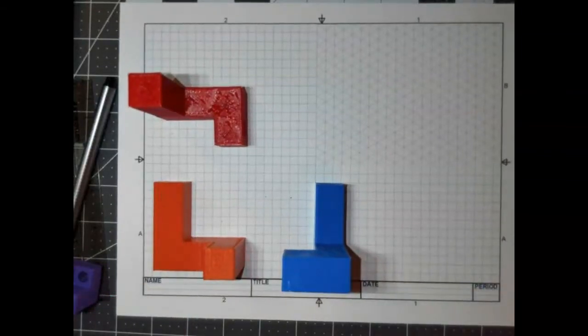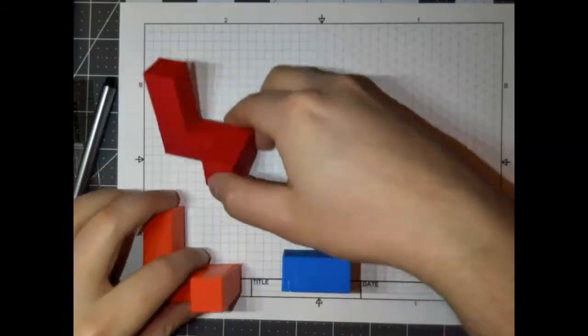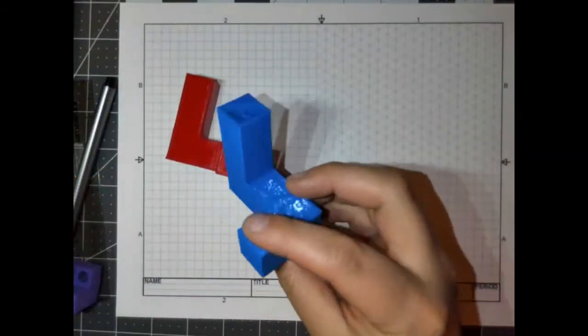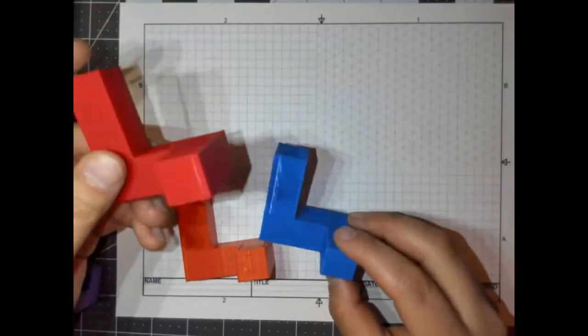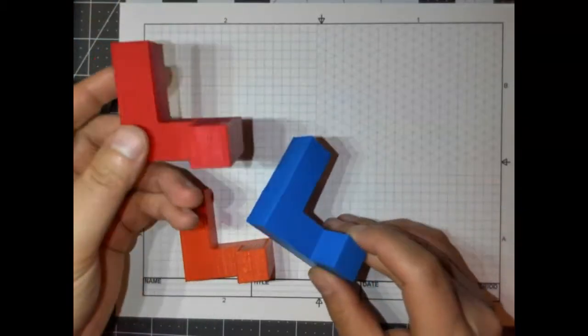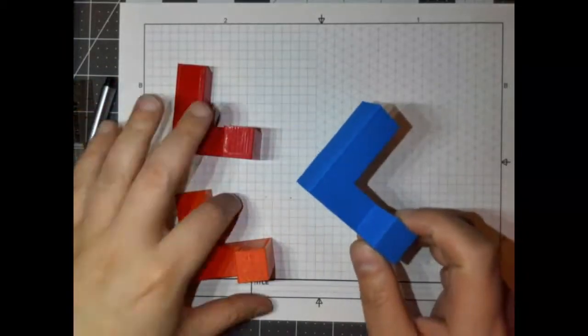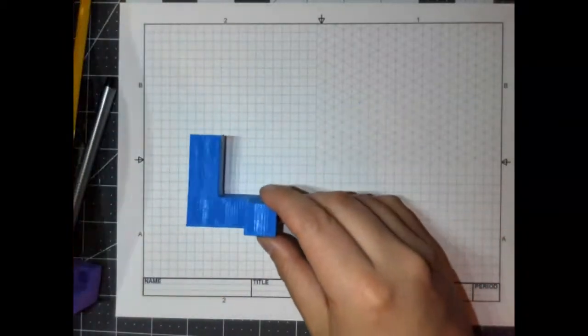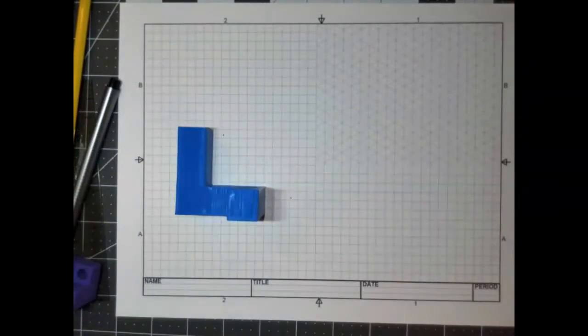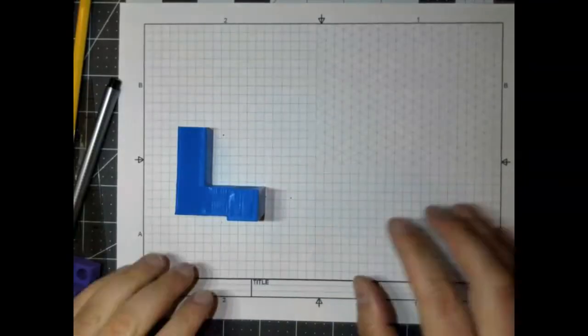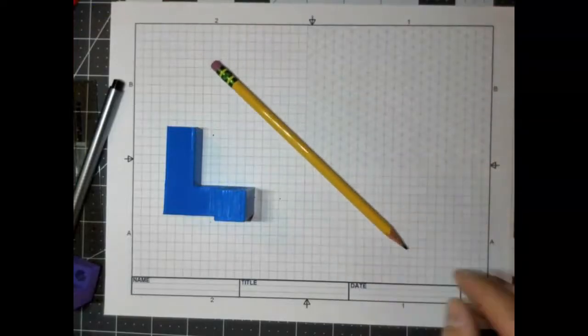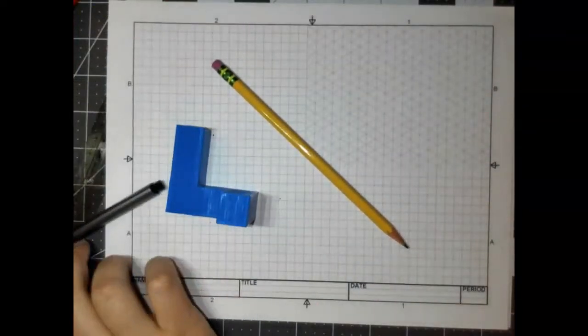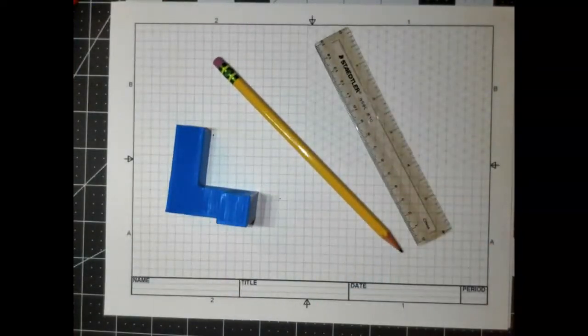Let's try something a little more complex. So here we have a part. I have a bunch of these. You should be able to come to my desk and grab one. It doesn't matter what color it is. So we're going to make the multi-view drawing of this part. You'll need a multi-view sheet of paper, a nice sharp pencil, a good ruler, and a good attitude.